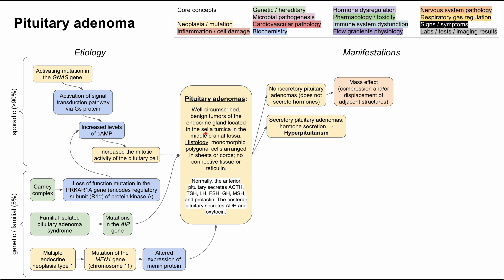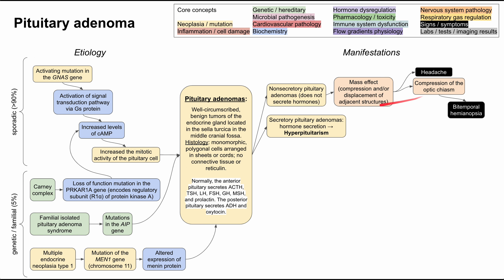This structure is located in the sella turcica and there are delicate structures around it. When affected, you'll have manifestations of the pituitary adenoma. It can cause headache from increasing intracranial pressure. It can also compress the optic chiasm — the optic nerves that cross right in front of the pituitary — resulting in a bitemporal hemianopsia, where you can't see the lateral parts of your vision.